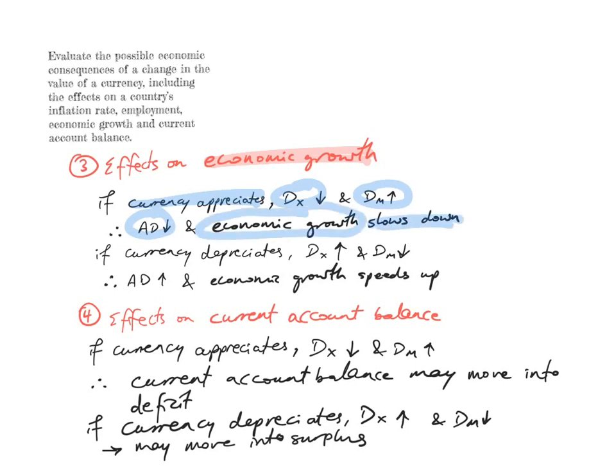And the opposite is true. If the currency depreciates — if its value falls — foreign demand for exports will increase, domestic demand for imports will fall, aggregate demand will therefore increase, and economic growth will speed up. So a currency depreciation can have some positive effects, like speeding up economic growth.